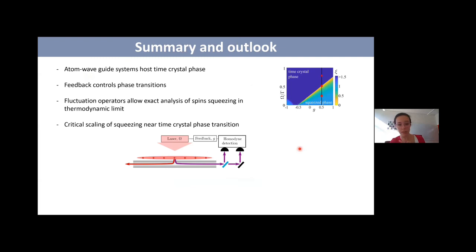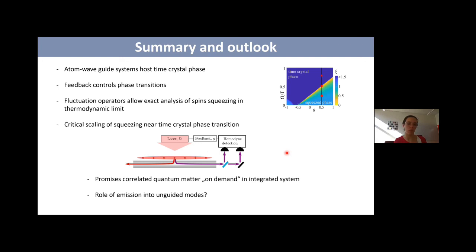In summary: atom-waveguide systems can host a time crystal phase. Feedback controls the phase transition — for example, at g = -0.5 you get only a time crystal phase with no stationary phase. We used fluctuation operators to show there is spin squeezing near the time crystal phase transition. The outlook is correlated quantum matter on demand in integrated systems — these could in principle be done experimentally. Of course, one must also consider the role of emissions into the unguided modes. Thank you very much.